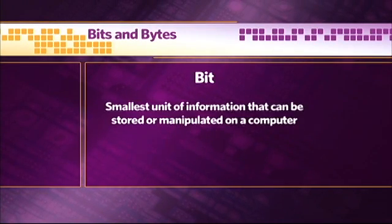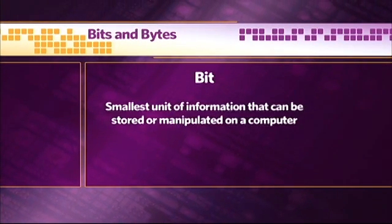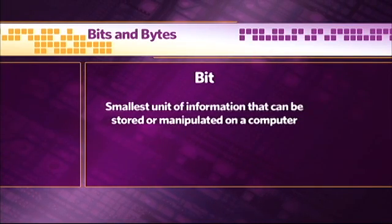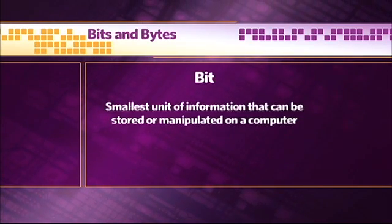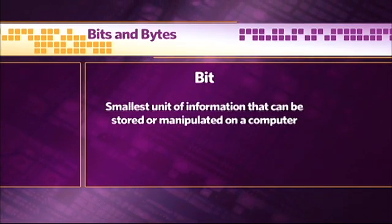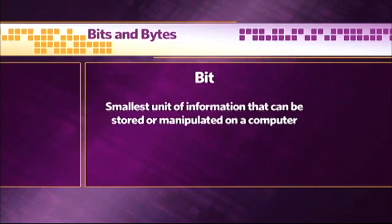A bit, or binary digit — which is where the word comes from — is the smallest unit of information that can be stored or manipulated on a computer. It consists of either a 1 or a 0. A bit's not just the smallest unit of information a computer can handle; it's also the largest.